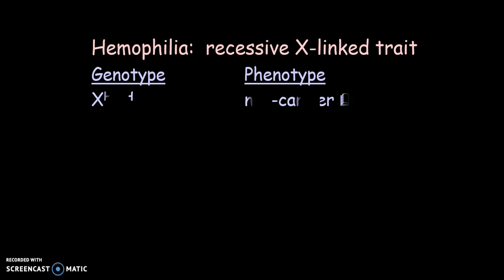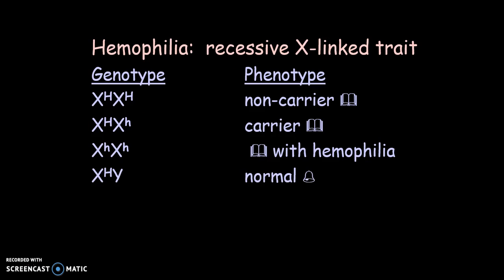This is showing you the genotypes and phenotypes for hemophilia. The capital H means normal, and lowercase h means they have it. A female can be a carrier because she has two X chromosomes, whereas the male only has one X. So if a male has the gene for colorblindness, he will have it, whereas a female would need two copies. It's not impossible for a female to have it, but it's not as common.